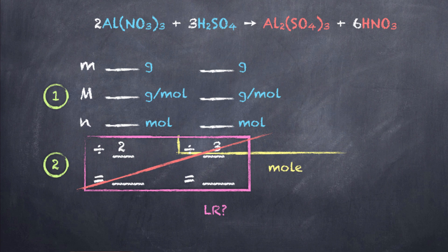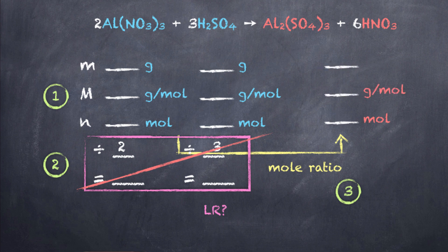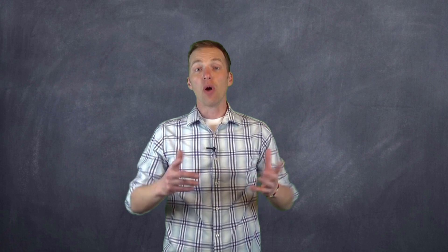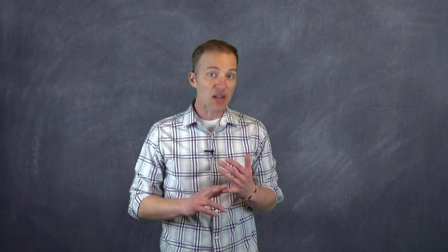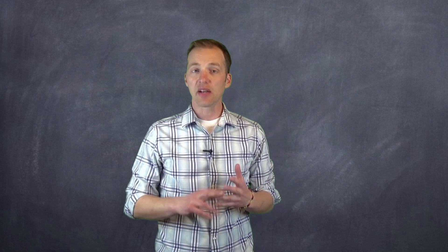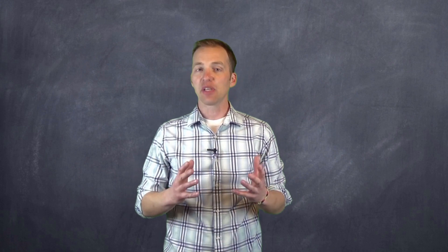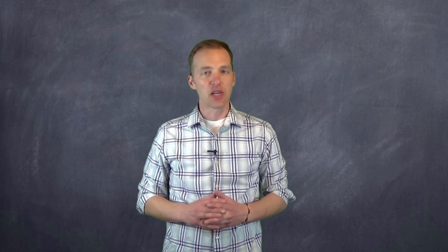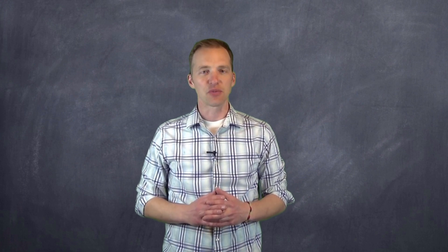Once we establish our limiting reagent, the process is the same as any other stoichiometric problem. We use our mole ratio as part of our third calculation to figure out the number of moles of product we are going to produce, and then we use the molar mass to ultimately figure out the mass. This really just adds one more element — figuring out which reactant is going to dictate how much product is produced. Hopefully after watching this video you have a better understanding of the boss test and how it is used to establish what is limiting and what is excess in a chemical reaction, and how these values are further used in stoichiometric calculations. Thanks for watching.